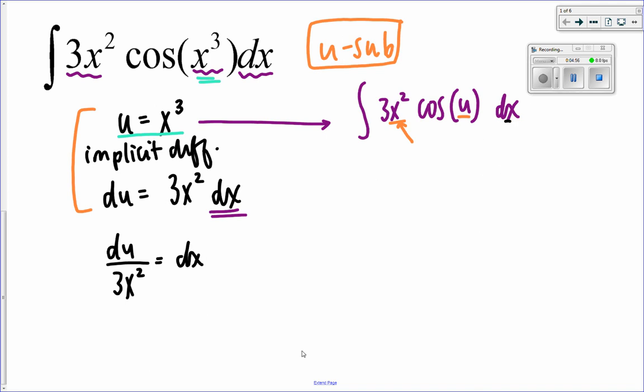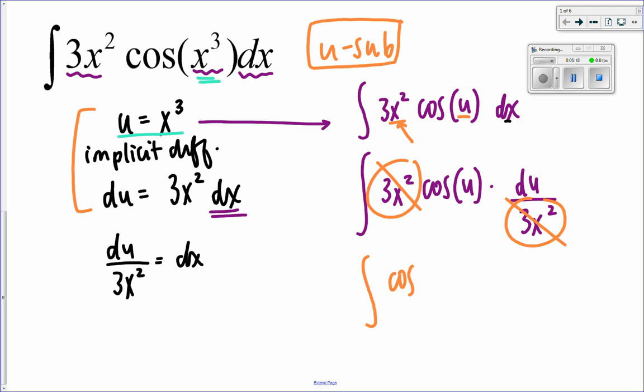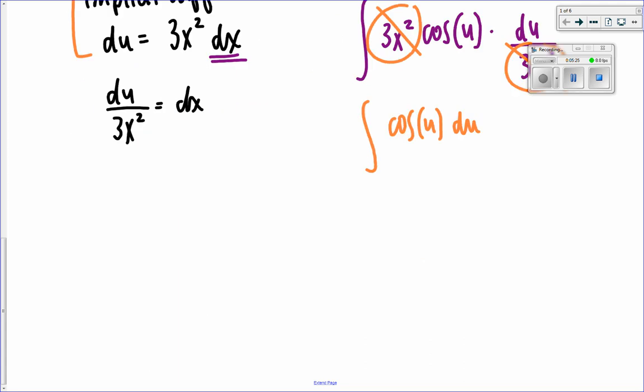So now I really have the integral of 3x squared times cosine of u. Instead of dx, I'm going to write du all over 3x squared. And this is great, because guess what happens? Look, we have 3x squared in the numerator and the denominator, and they cancel. So now I'm left with the integral of cosine of u with respect to u. And now this is very simple. The antiderivative of cosine is really sine. So I have sine of u plus c.